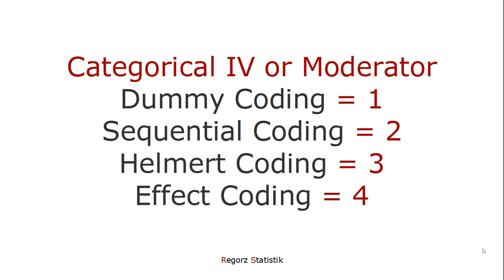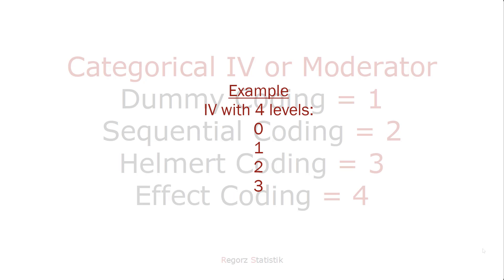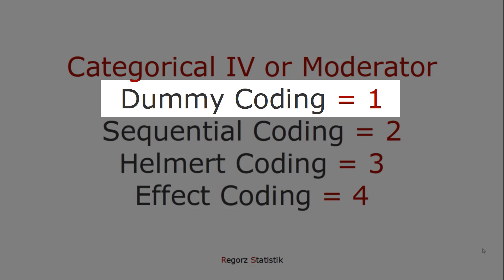There are different possible values for this parameter. If you want to have dummy coding, you use a 1. Let's say you have a categorical independent variable with four levels, 0, 1, 2, 3. With dummy coding, you would get three dummy variables. The first compares level 1 to level 0, the second level 2 to level 0, and the third level 3 to level 0.